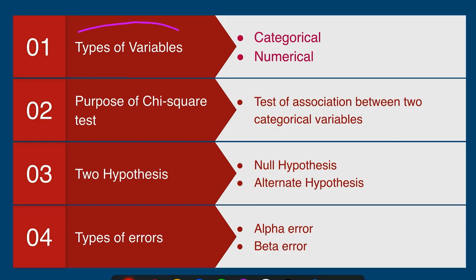The first one is about the types of variables. Variables are nothing but the attributes of an individual which differ from one individual to another. Each and every single question in a research will become a variable, or some questions combined together make one variable. For example, weight may be one single variable, or if you calculate BMI out of weight and height, that also becomes a variable.